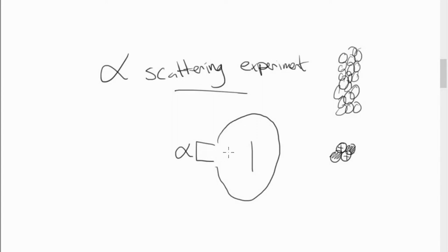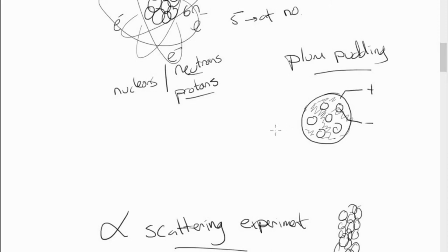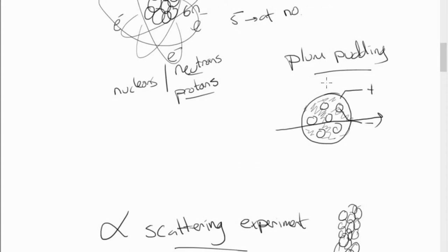These alpha particles are released from the source at really high speed. According to the plum pudding model, firing alpha particles was like shooting bullets at a pudding — they should rip straight through. Would the bullets bounce off the pudding? Impossible. But what we actually saw was that most of the particles did pass straight through, but some had these really large deflections. This proved that whatever was being shot at was not pudding.